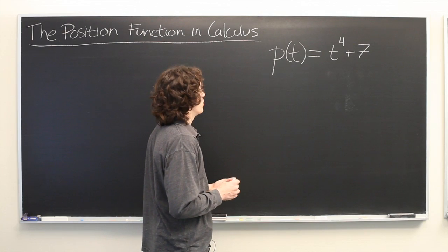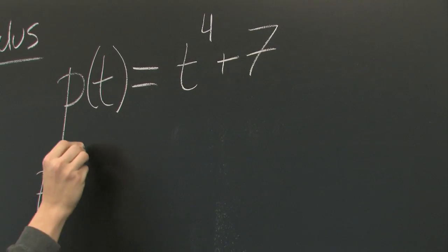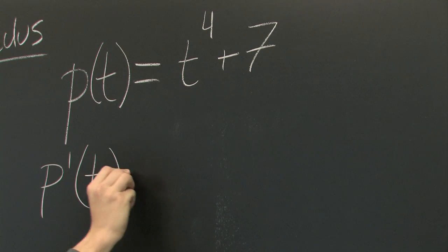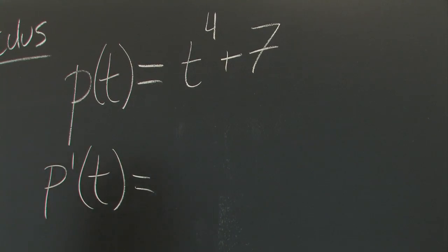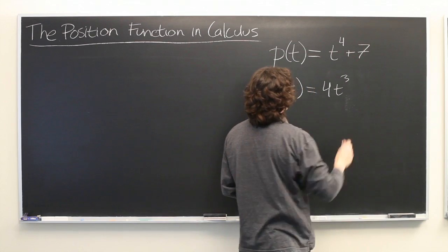Now, the interesting thing about the position function is, well, we'll take the derivative of it and see. p prime of t, we get 4t cubed, seven goes out.